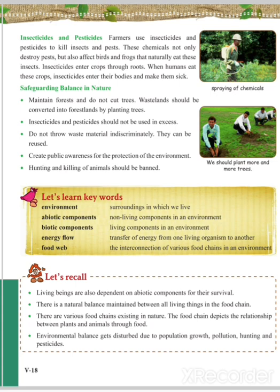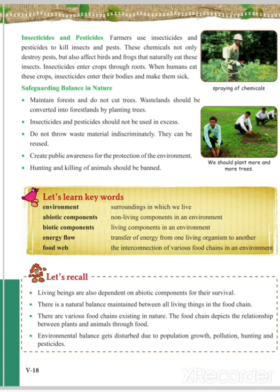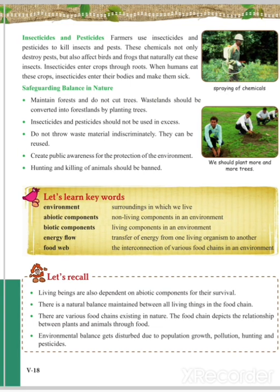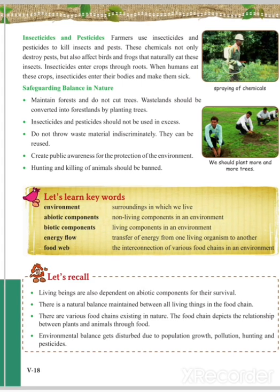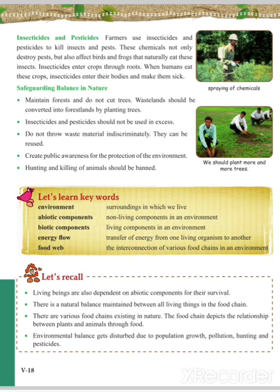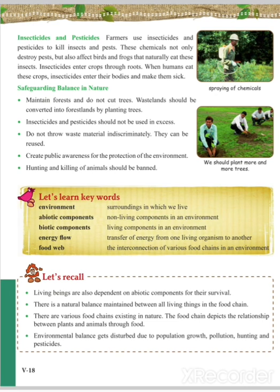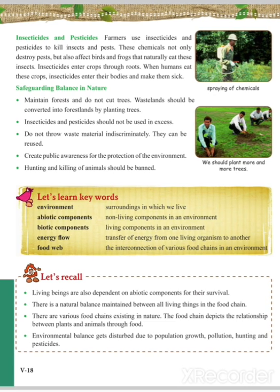Now, how do we safeguard the balance in nature? We should stop cutting trees and grow more trees, reduce the use of chemicals on farms, try to reduce waste and reuse it, create public awareness for the protection of the environment and wildlife, and stop hunting and killing of animals. Many other steps can be taken to save the environment and nature.